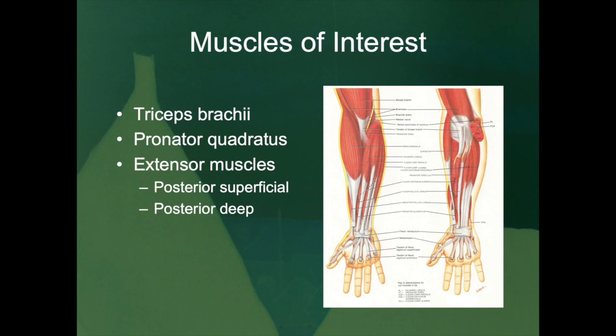The triceps brachii interacts with the distal end of the humerus as its origin, and then interacts via its insertion with the olecranon of the ulna. Unlike the biceps brachii, which is a flexor muscle, the triceps brachii extends the forearm. That gross movement is expressed through the olecranon of the ulna — that is where the hinging really begins to express itself in terms of the functionality of the bone.